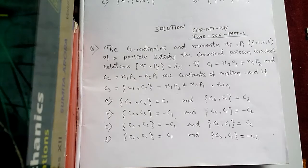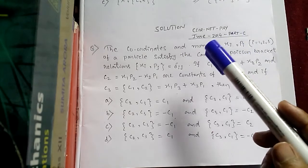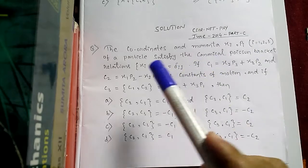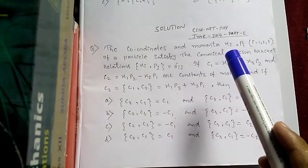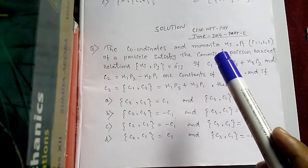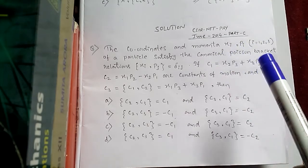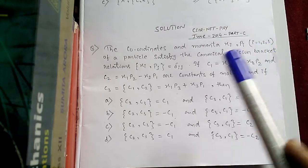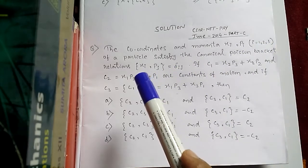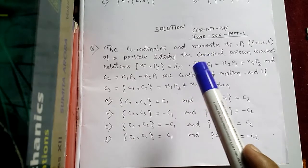Hey, this is Bidhan, welcome to CSI NET physics solutions. Today we take a problem of classical mechanics based on Poisson brackets. It's a June 2014 Part C problem. It says coordinates and momenta — coordinates x_i and momenta p_j, where i equals 1 to 3 — satisfies the relation: Poisson bracket of x_i, p_j equals delta_ij.